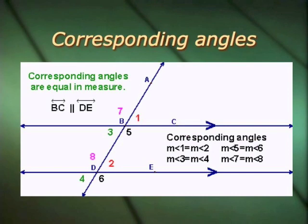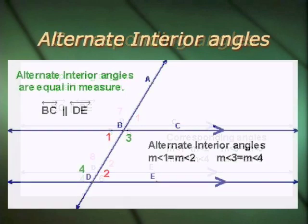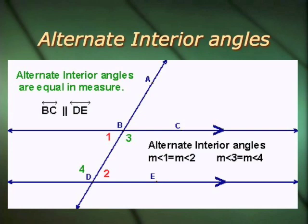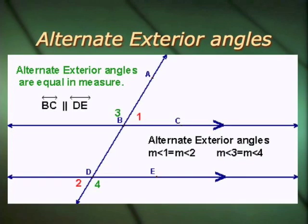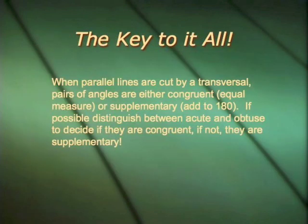It's a good idea to pause this frame and just look at what corresponding angles look like. And the colors that match here are alternate interior. Do you see the Z? These are called alternate exterior. Pause and make sure you understand. Here's the shortcut. They're either equal or supplementary. That's it!